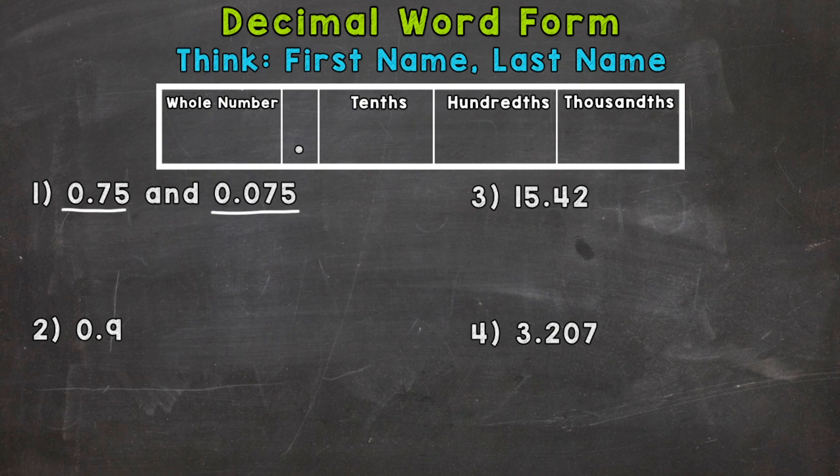So the first one, we do not have a whole number. We have a zero, we have a seven in the tenths, and a five in the hundredths. The second one, we do not have a whole number. We have a zero in the tenths, a seven in the hundredths, and a five in the thousandths.